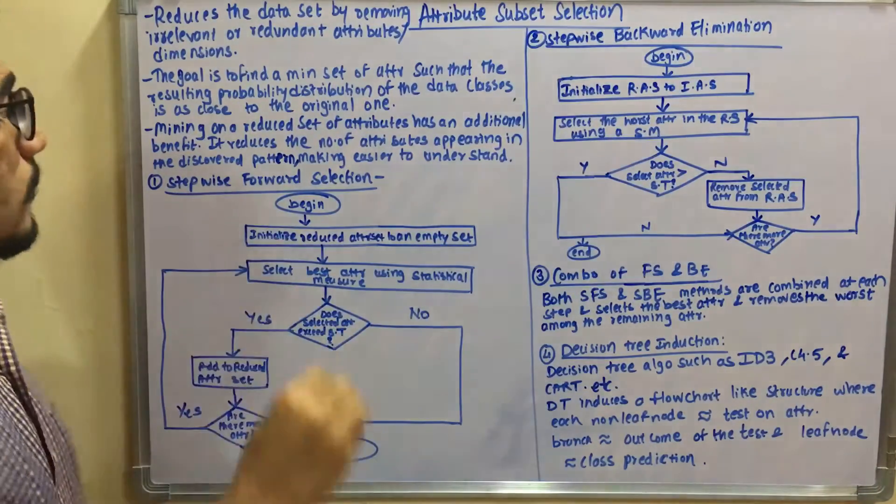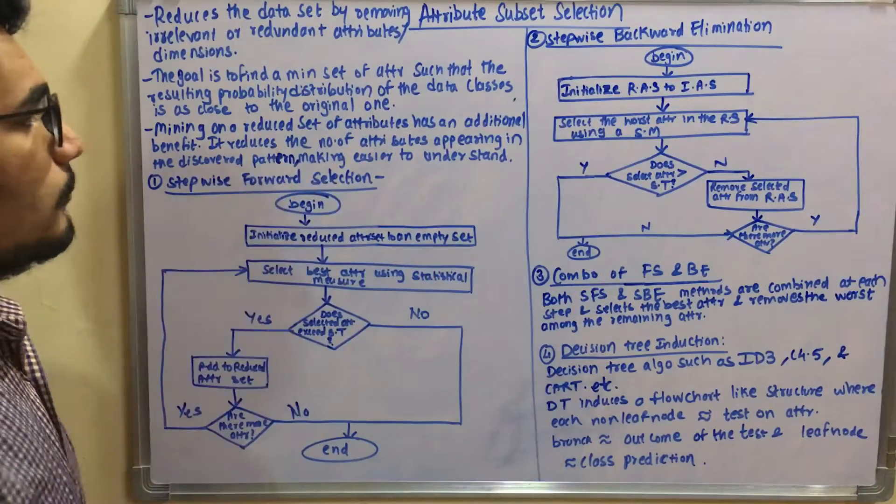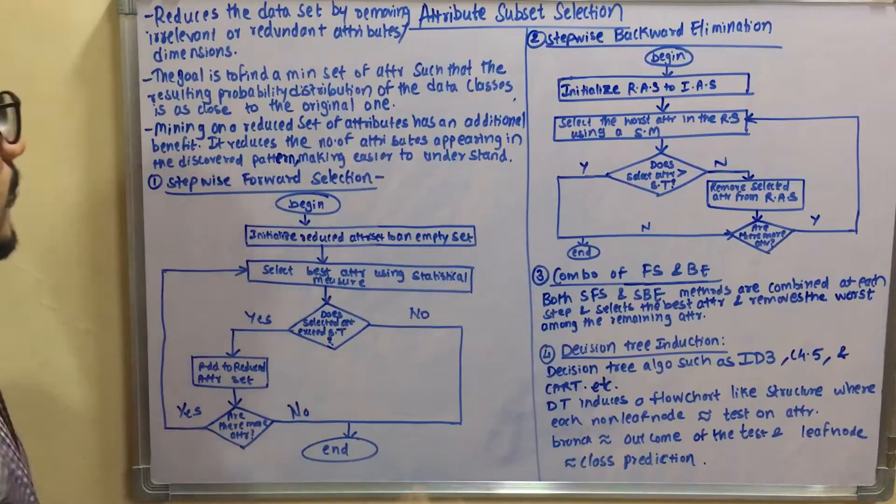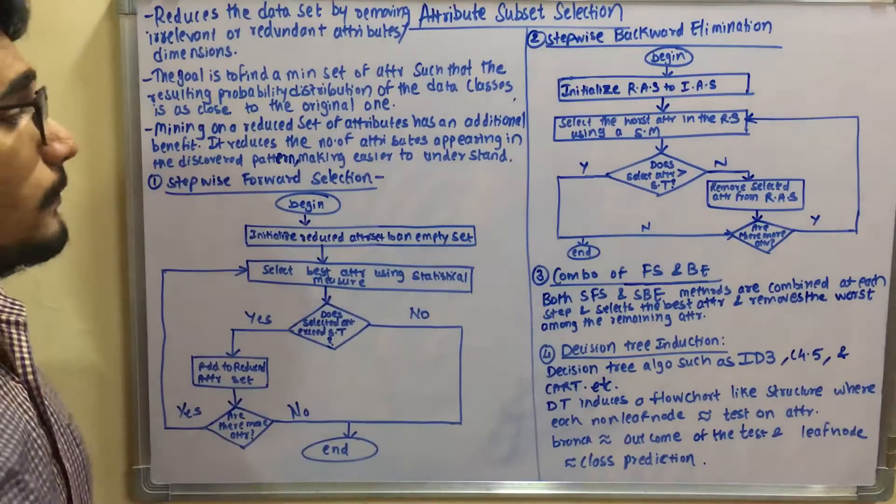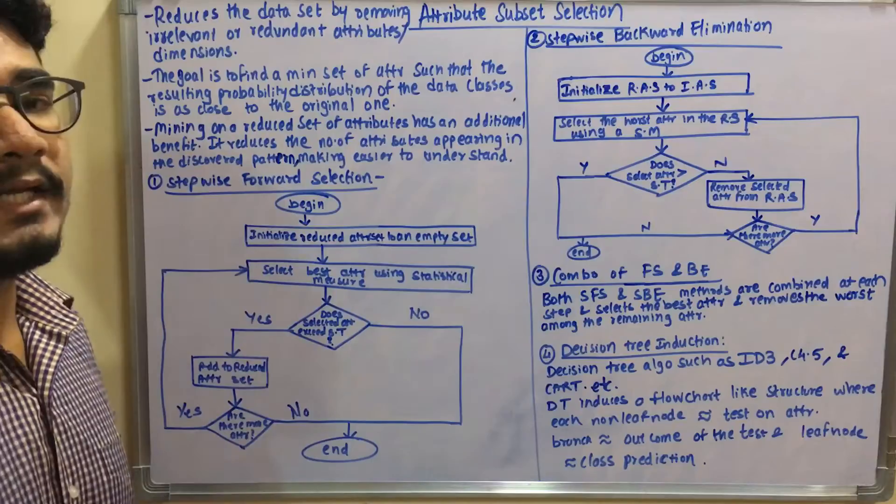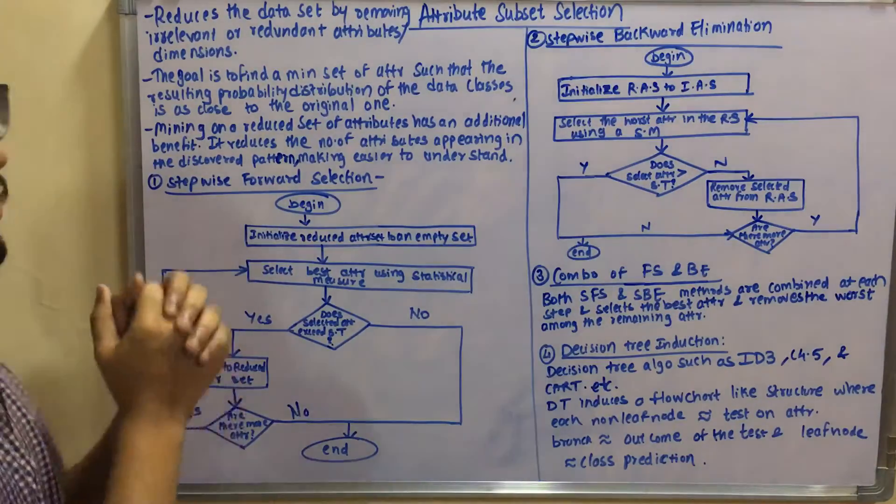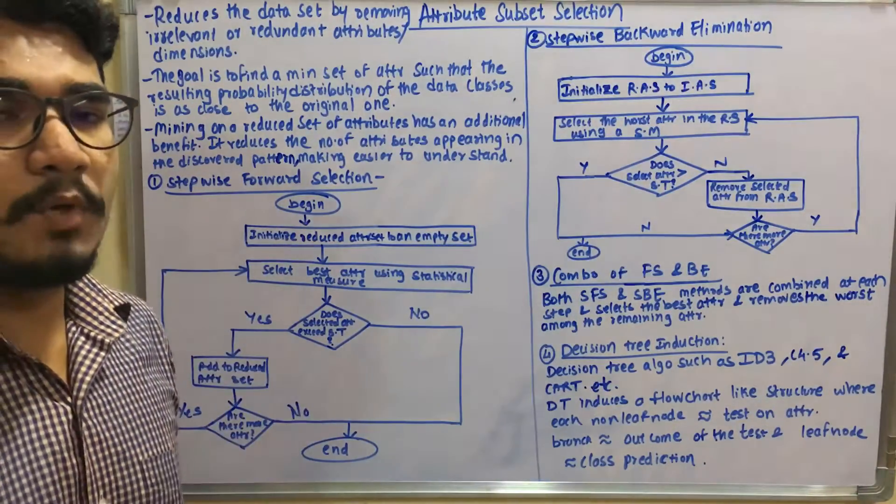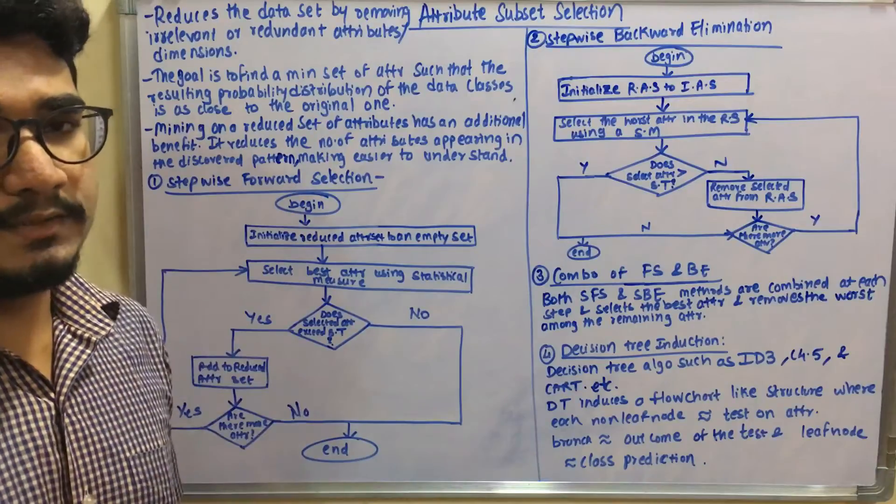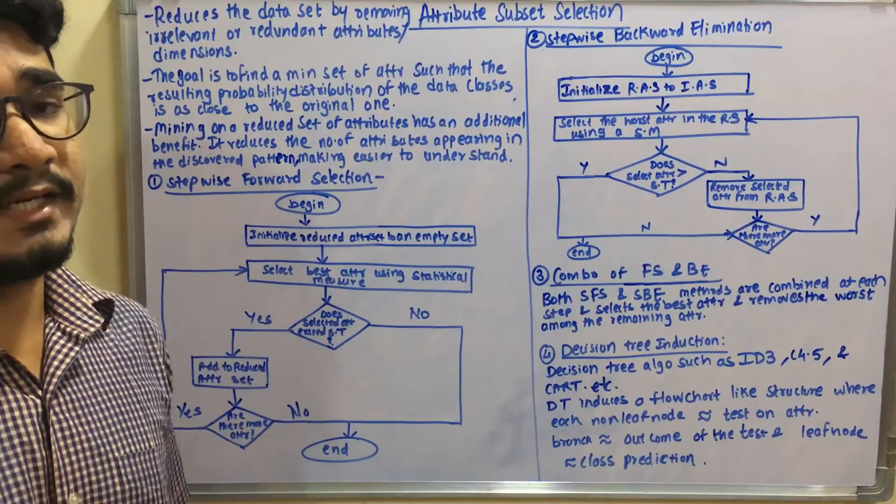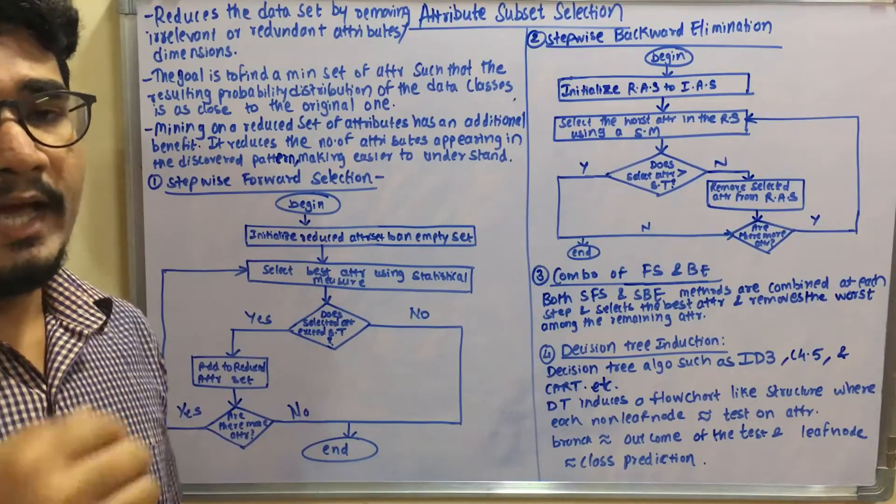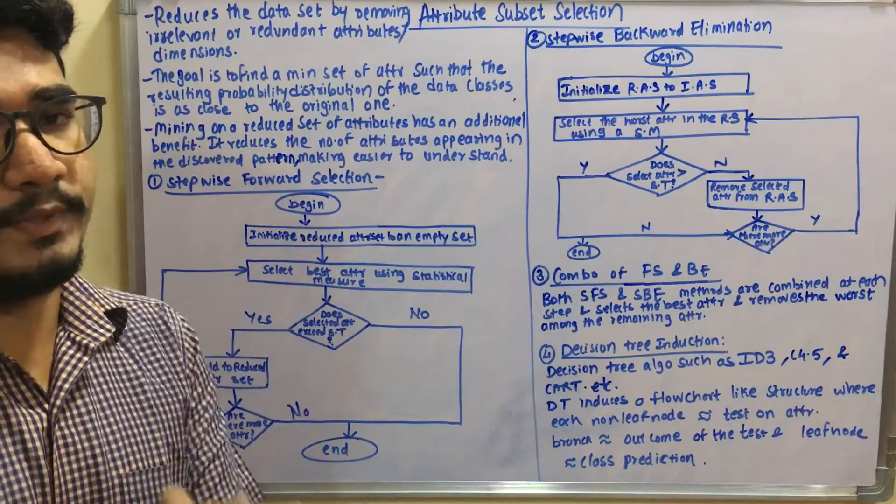It focuses on mining on a reduced set of attributes that has an additional benefit - it reduces the number of attributes appearing in the discovered pattern, making it easier to understand. It's obvious that if you have fewer attributes, you can draw the pattern easily and discover all the main interestingness patterns or measures. If it's very large, it's difficult and time consuming.